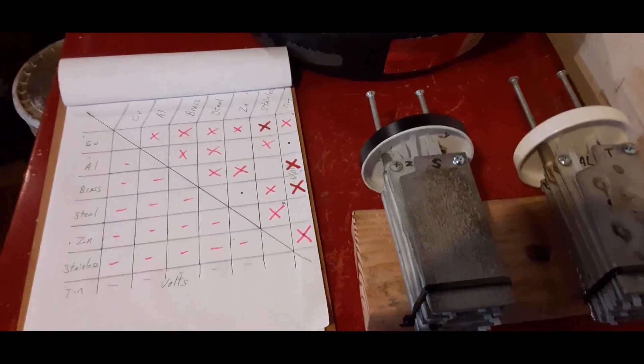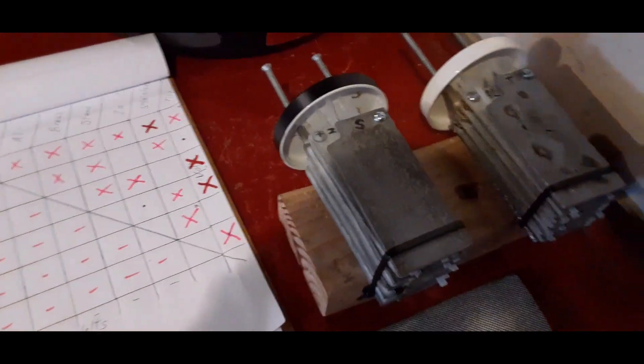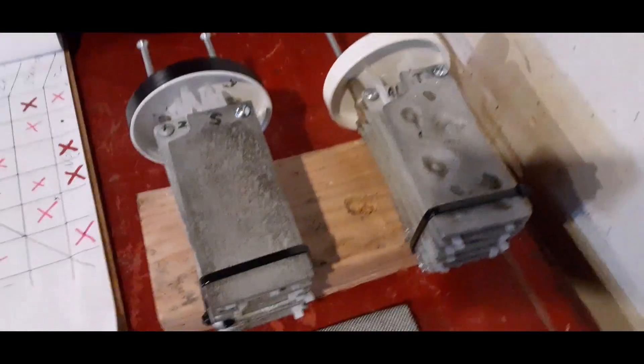Alright, I have 16 cell combinations done, I have five left to do. This time we're going to do zinc and steel, and then we're going to do aluminum and tin.